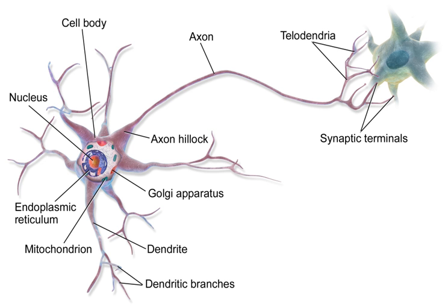For example, photoreceptor cells in the retina constantly release the neurotransmitter glutamate in the absence of light. So-called off-bipolar cells are excited by the released glutamate. However, neighboring target neurons called on-bipolar cells are instead inhibited by glutamate, because they lack typical ionotropic glutamate receptors and instead express a class of inhibitory metabotropic glutamate receptors. When light is present, the photoreceptors cease releasing glutamate, which relieves the on-bipolar cells from inhibition, activating them. This simultaneously removes the excitation from the off-bipolar cells, silencing them.